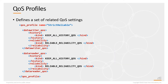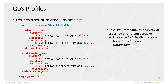A QoS profile defines a set of related QoS settings. In this example, the name of the QoS profile is 'strict reliable.' If you use this profile, you should get a strict reliable connection between the data writer and data reader. Therefore this profile contains definitions of QoS values for both data writer and data reader objects, and you're supposed to use this profile to create both. If you do, you're ensured that the data writer and data reader QoS values are compatible and will provide the designed end-to-end behavior.